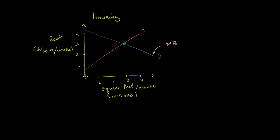For the very first few square feet, the benefit to the renters — the consumers — is huge. It's worth over four dollars per square foot to them. That's not necessarily what they'll pay, but that's what it's worth. I'm going to view the supply curve as a marginal cost curve. When we have very few square feet, the land is cheap and most suitable for building, so the opportunity cost for suppliers of those first few square feet is very low.